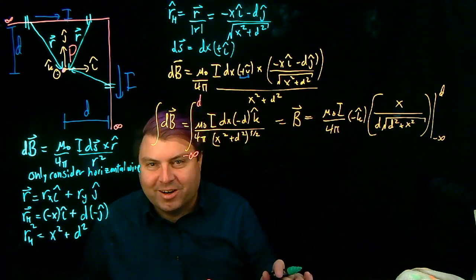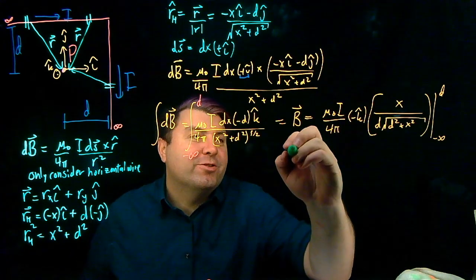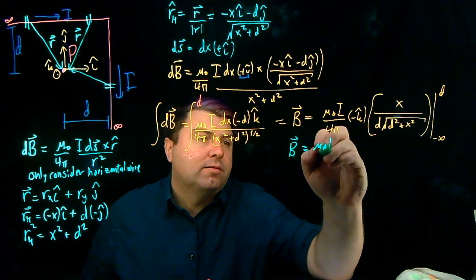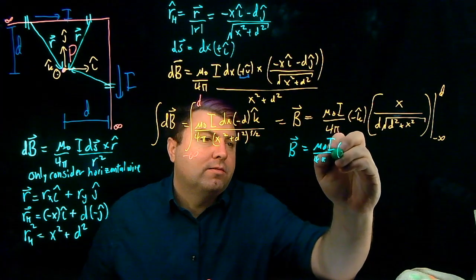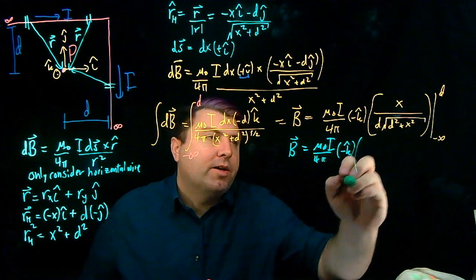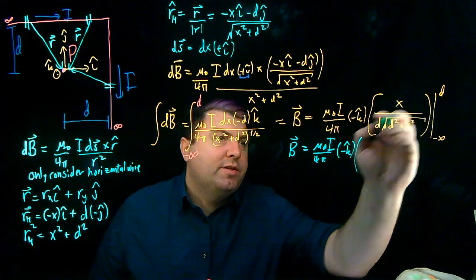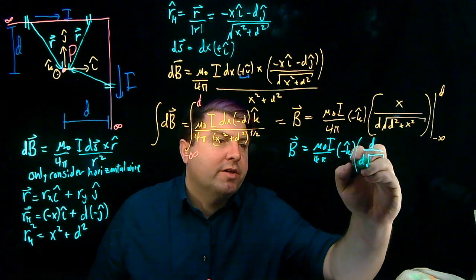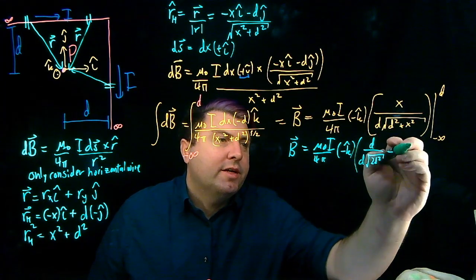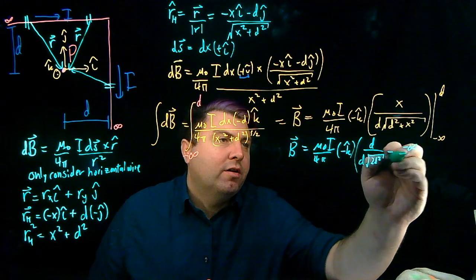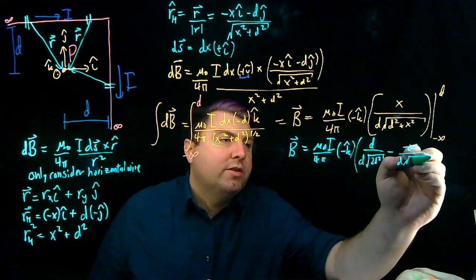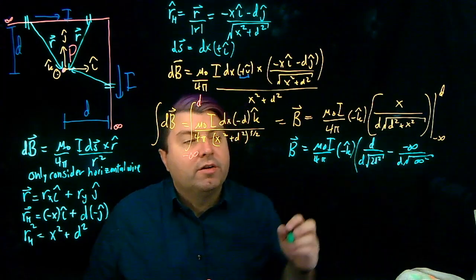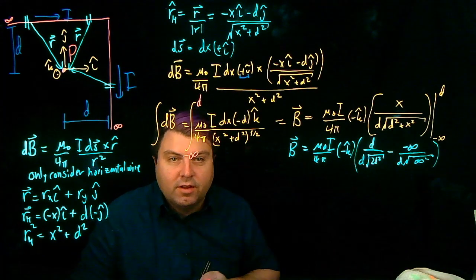So using another marker, we can then write this whole thing now. So this part is going to be then d. So we have d over d times square root of d squared plus d squared. It's going to give me 2d squared. Minus, and then I have negative infinity over d times, and then just to save ourselves a little bit of time, d squared plus infinity squared is just going to be infinity squared.